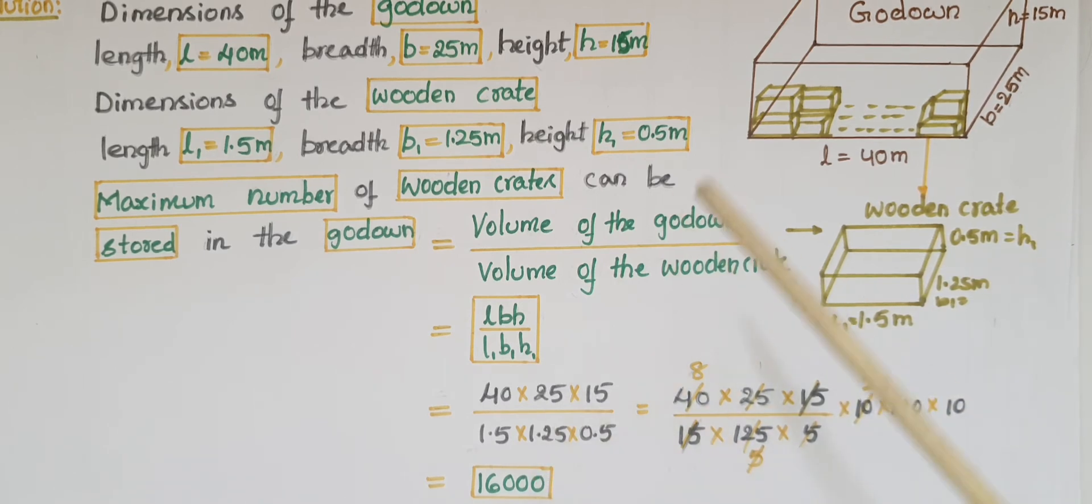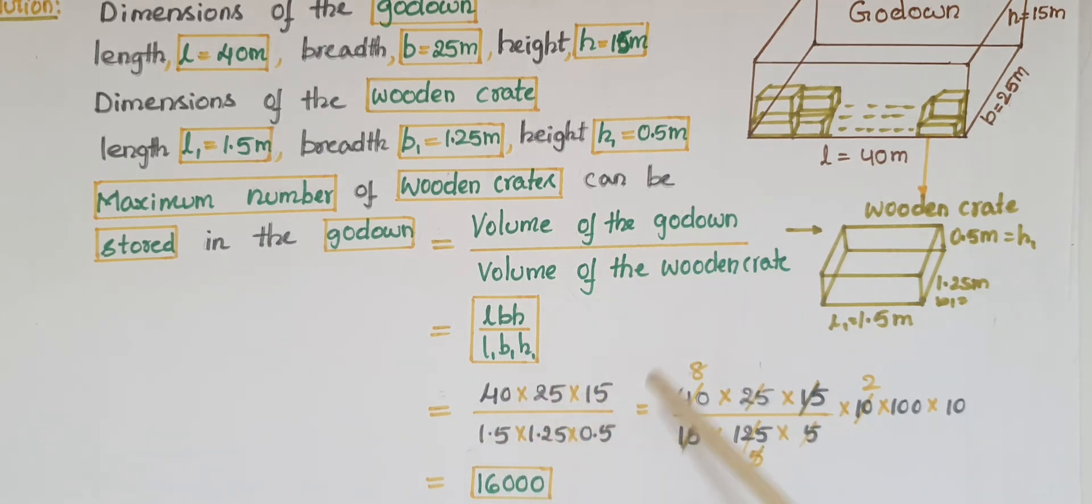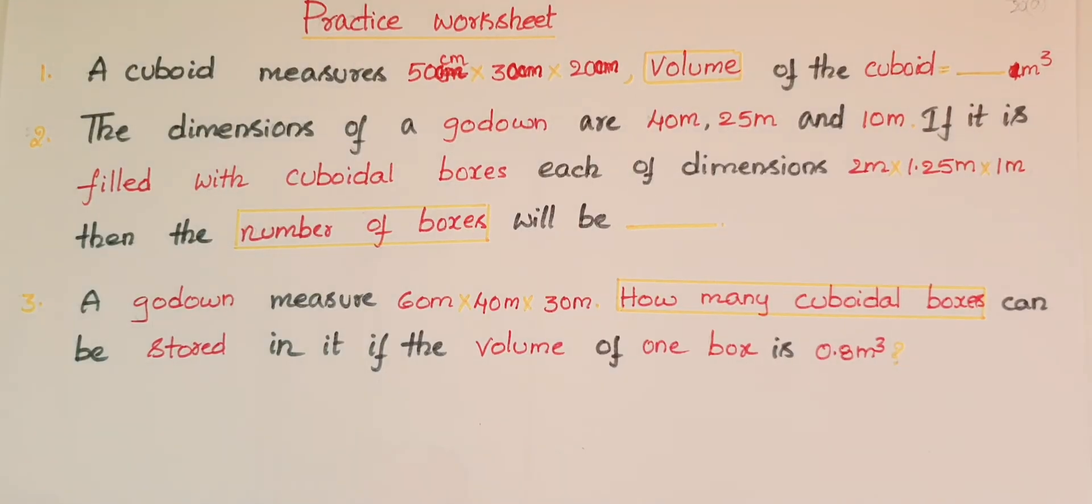So here, don't calculate separately the volume of the godown and wooden crate, because the calculation is easier if you apply the formula directly like this. Now please do this exercise.